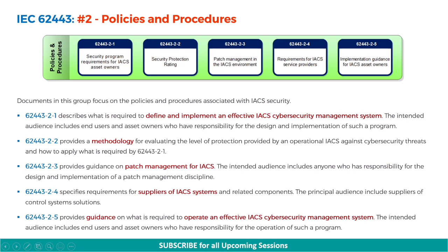The second section is Policies and Procedures, that is 62443.2. Documents in this group focus on the policies and procedures associated with IACS security. 62443.2.1 describes what is required to define and implement an effective IACS cybersecurity management system, intended for end users and asset owners. 62443.2.2 provides a methodology for evaluating the level of protection provided by an operational IACS against cybersecurity threats. 62443.2.3 provides guidance on patch management, intended for anyone responsible for the design and implementation of a patch management discipline.